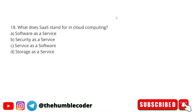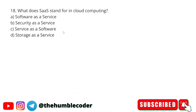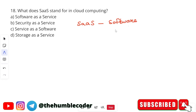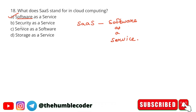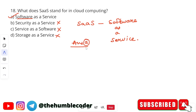What does SaaS stand for in cloud computing? As mentioned in a previous question, SaaS stands for Software as a Service. The options include Software as a Service, Security as a Service, Service as a Software, and Storage as a Service. Always read all options as they can be tricky. The correct answer is option A — Software as a Service.